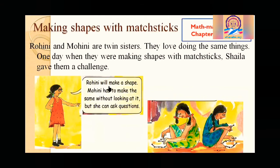Rohini will make a shape. Mohini has to make the same without looking at it, but she can ask questions. Means they both have to make a shape but they need not to see each other's shape. They will sit like this and she will make this way, she will make this way. And what is the challenge? Without seeing the shape, they will make similar shape. Is it possible? Let us see.